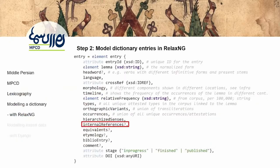Step two: we formalize what we actually want to have in the dictionary — what we consider a dictionary entry. We picked RelaxNG because of its very simple format. We could have used TEI, but that's XML with whole other fields we wouldn't need. The short notation of RelaxNG allows us to very easily define what we want in each entry, what are optional elements, and what are obligatory elements. An entry consists of: an attribute, a lemma, a headword (used when we have two morphological forms of a single lemma), language, morphology, timeline showing frequency across time, relative frequencies, types, and orthographic variants — which are very important for Persian because there's a distinction between transcription and transliteration.